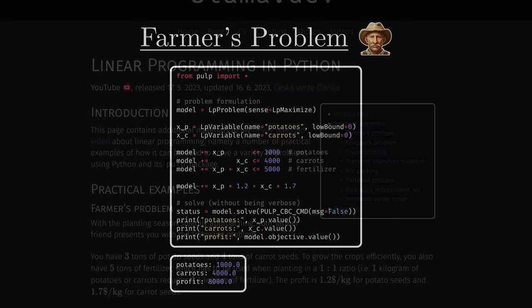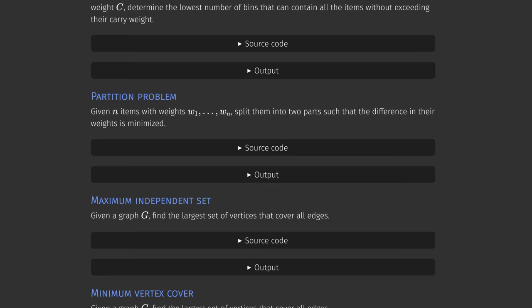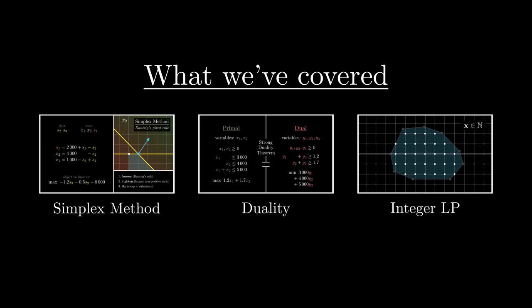So as an introduction to linear programming, I think we've covered most of the important topics, that being the simplex method, duality, and integer linear programming. However, we've covered them rather superficially, and there is a great deal of nuance to each of them.